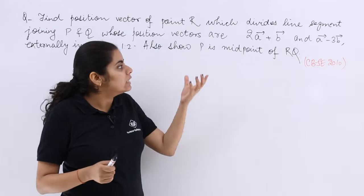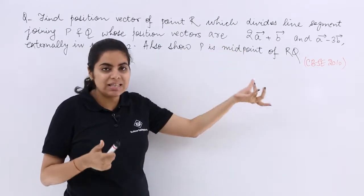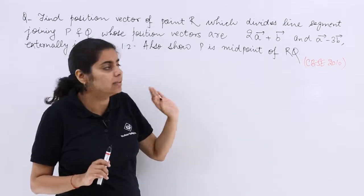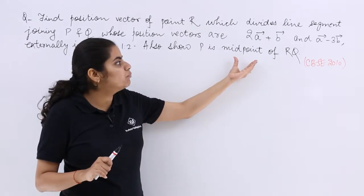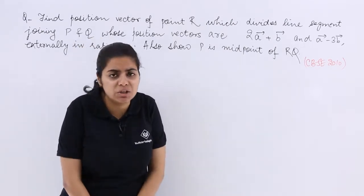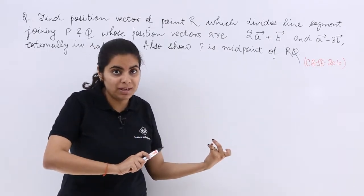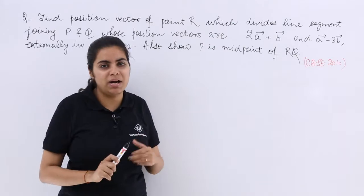Also it has been given that these points are basically divided in the ratio something in the external manner. Also you have to show that P is a midpoint of RQ. That means the question requires a find part and also a proof part.